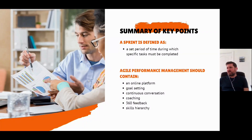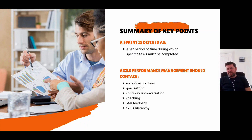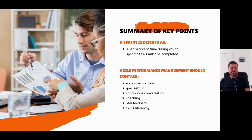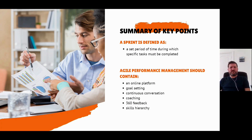So a summary of the key points. A sprint is defined as a set period of time during which specific tasks must be completed, and I've shown how that can be accommodated within the IP suite. Agile performance management should contain an online platform, the ability to do goal setting, and capture continuous conversation and coaching so we can engage with third parties. We can also importantly provide 360-degree feedback from peers, and there is a skills hierarchy in there so that we can capture those skills within the system.